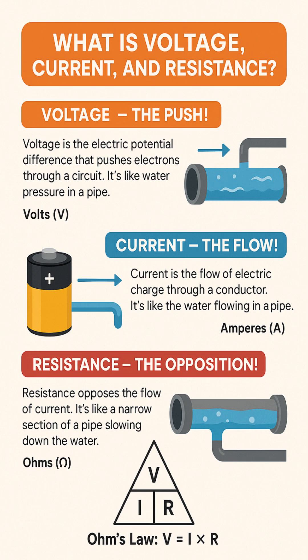These three concepts are beautifully linked by a fundamental principle known as Ohm's Law, which states that voltage equals current multiplied by resistance, or V equals I times R. The triangle diagram is a helpful tool to remember this relationship. Simply cover the value you want to find, and the position of the other two letters will show you the correct formula to use.